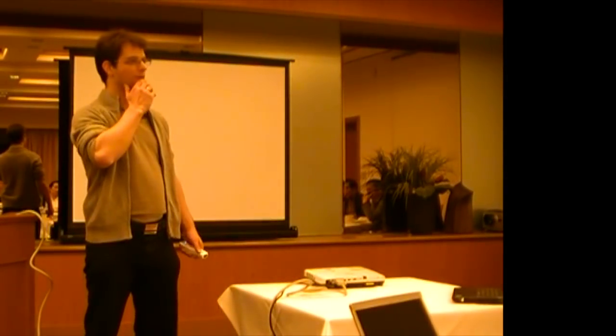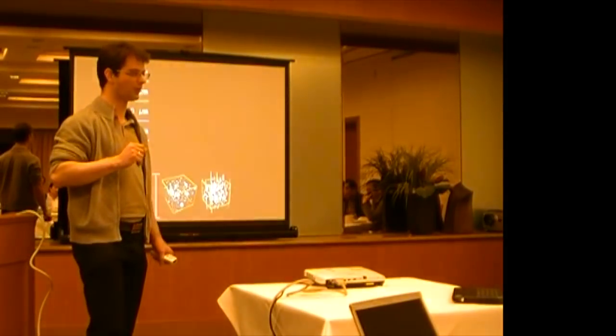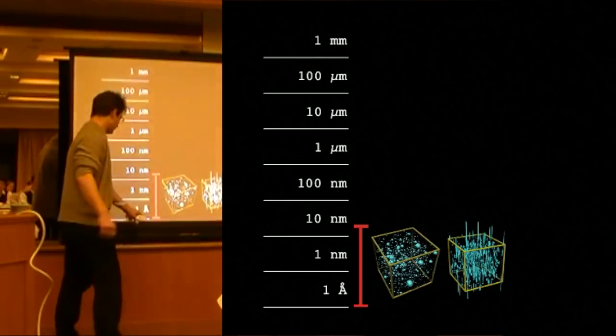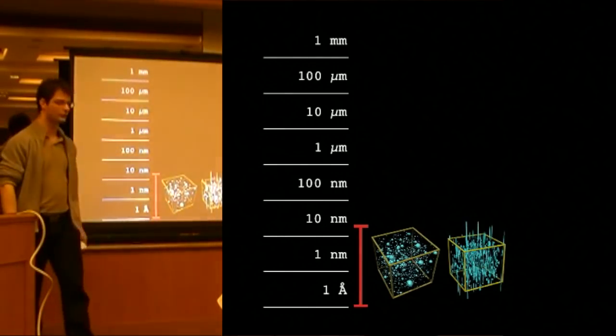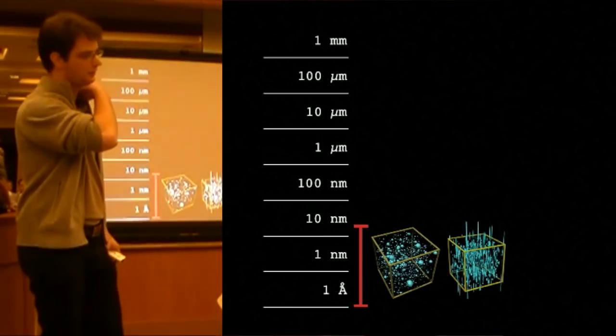At the moment, we have one instrument capable of measuring both isotropic and anisotropic systems. We can determine length scales from about one angstrom to about several tens of nanometers, 20 or 30, if you're lucky.